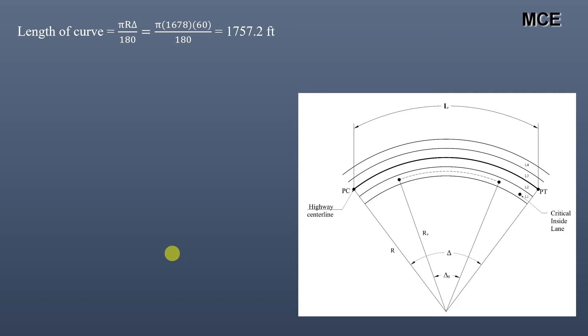Tangent distance is given as T = R tan(Δ/2) = 1678 tan(60/2) = 968.8 feet.